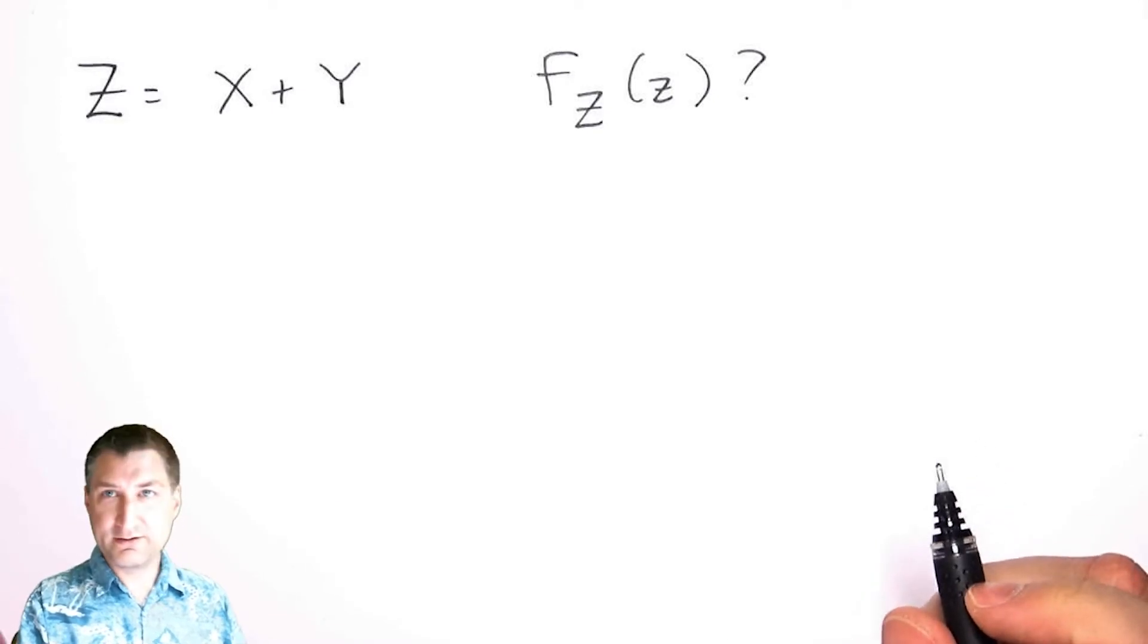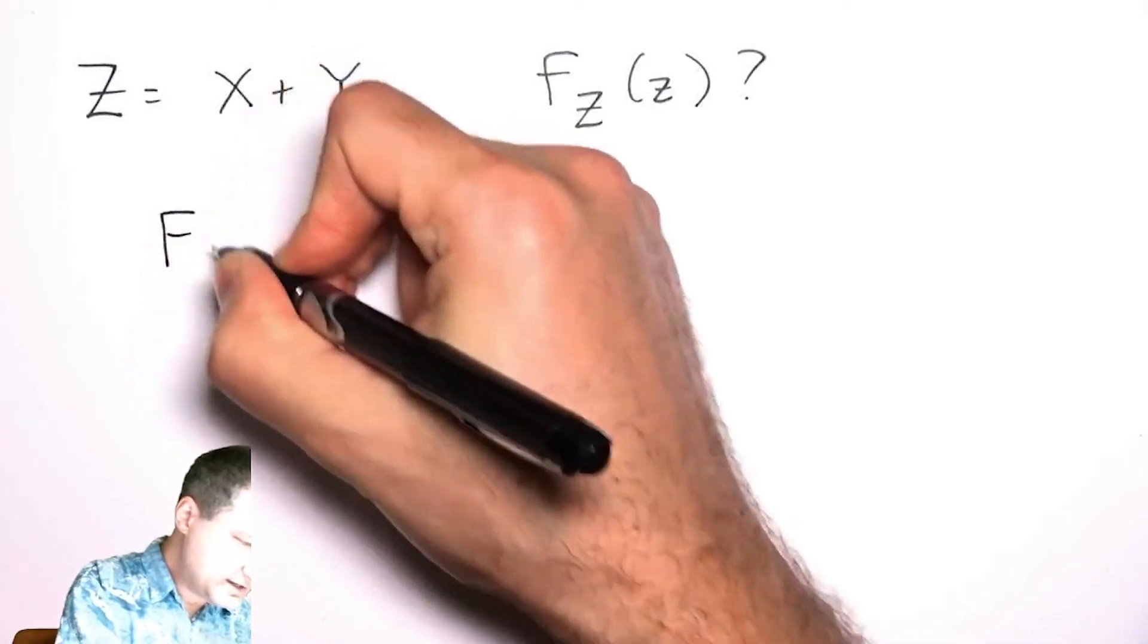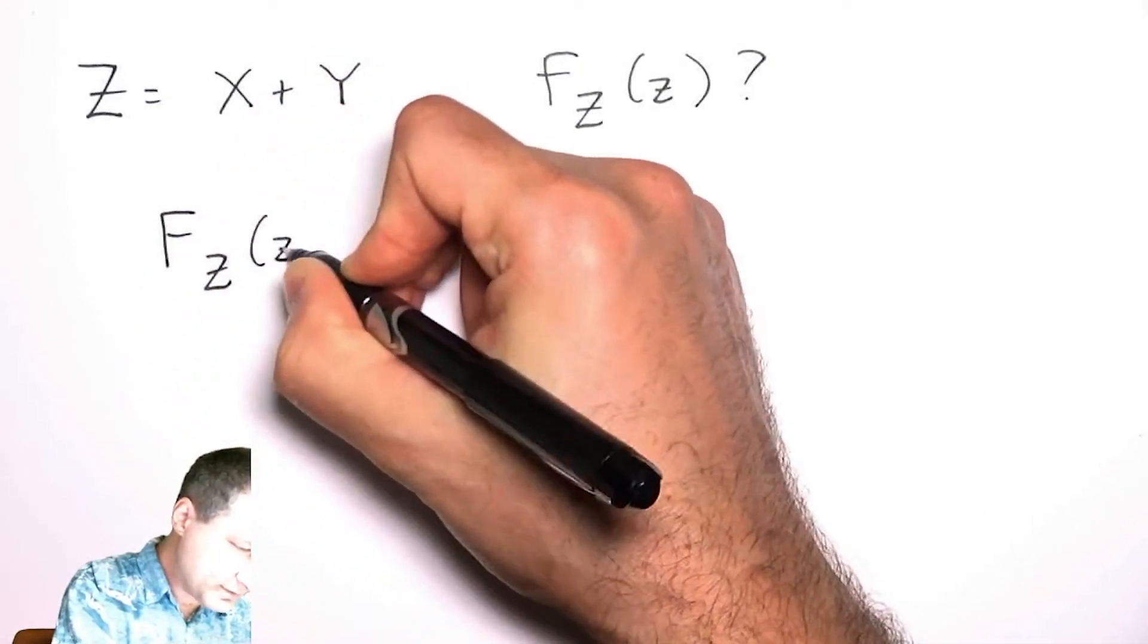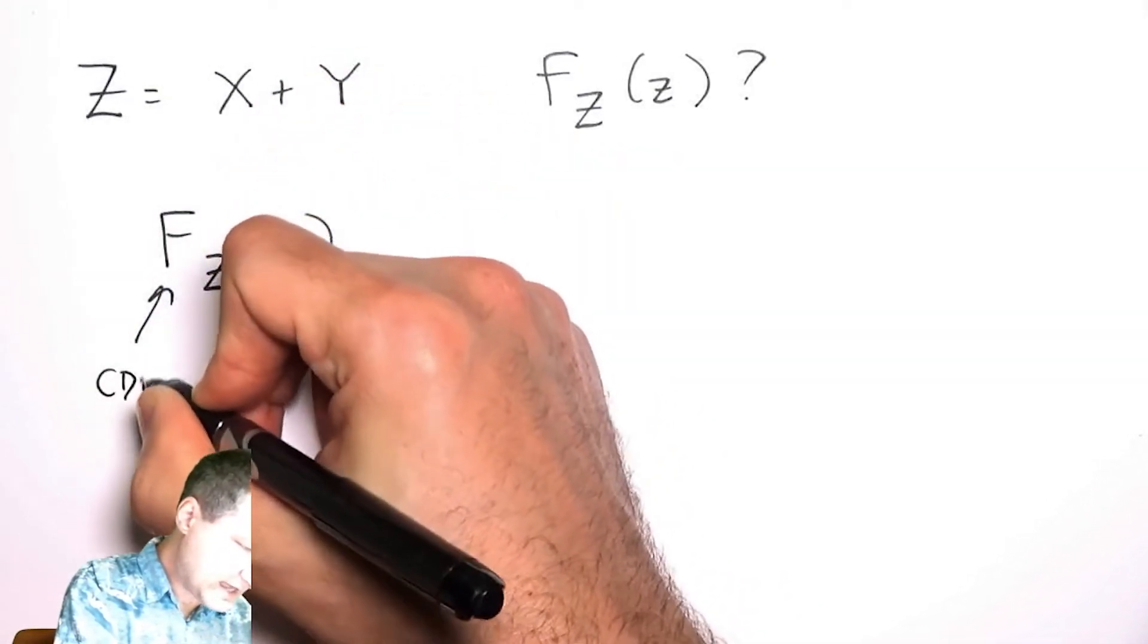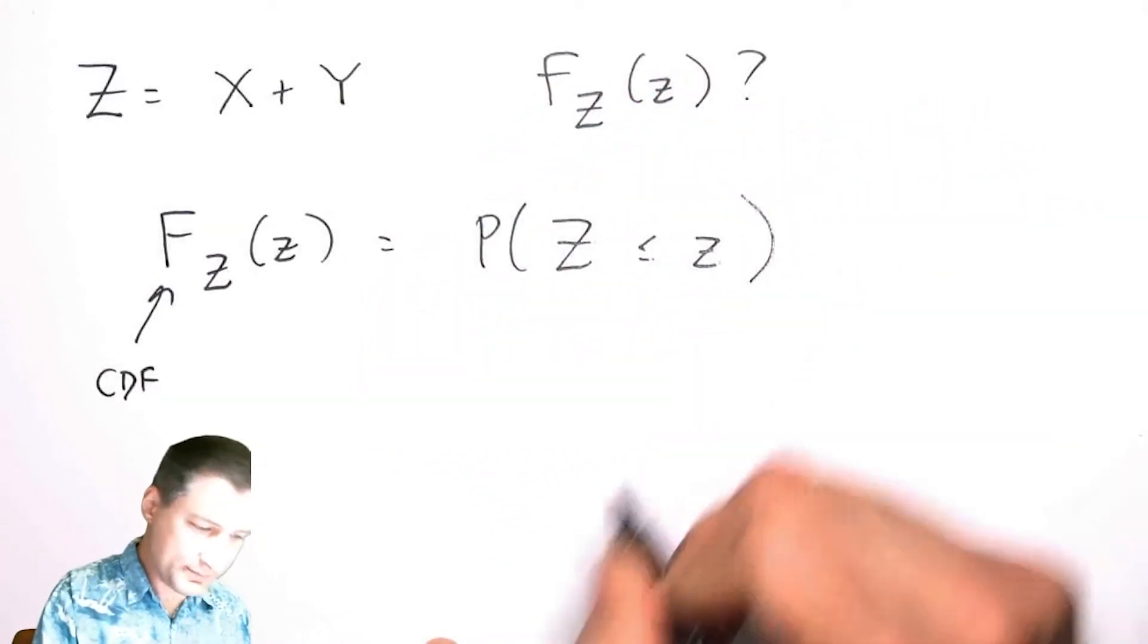Well, let's go back to how we derive PDFs from first principles. The PDF I can derive from the CDF, capital F, that's the probability that Z is less than or equal to some number.